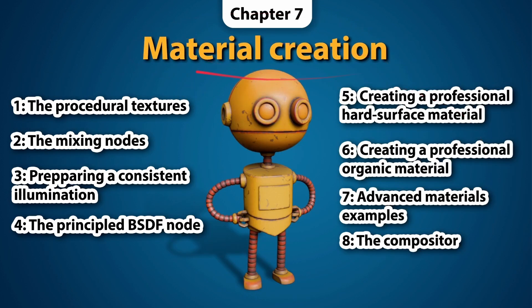The seventh chapter is about material creation. We'll see how to create procedural textures using Blender's Shader Editor, starting with basic concepts like texture nodes and mixing nodes. We'll look at a complete workflow for creating professional materials for both hard surface and organic models, using a little robot and a dragon as examples. Finally, we will also see how to create post-processing effects for our renders using the compositor, to give them a professional finish.